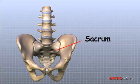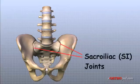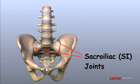There is a joint on each side of the sacrum that connects the sacrum to the pelvis. This joint is called the sacroiliac, or SI joint.